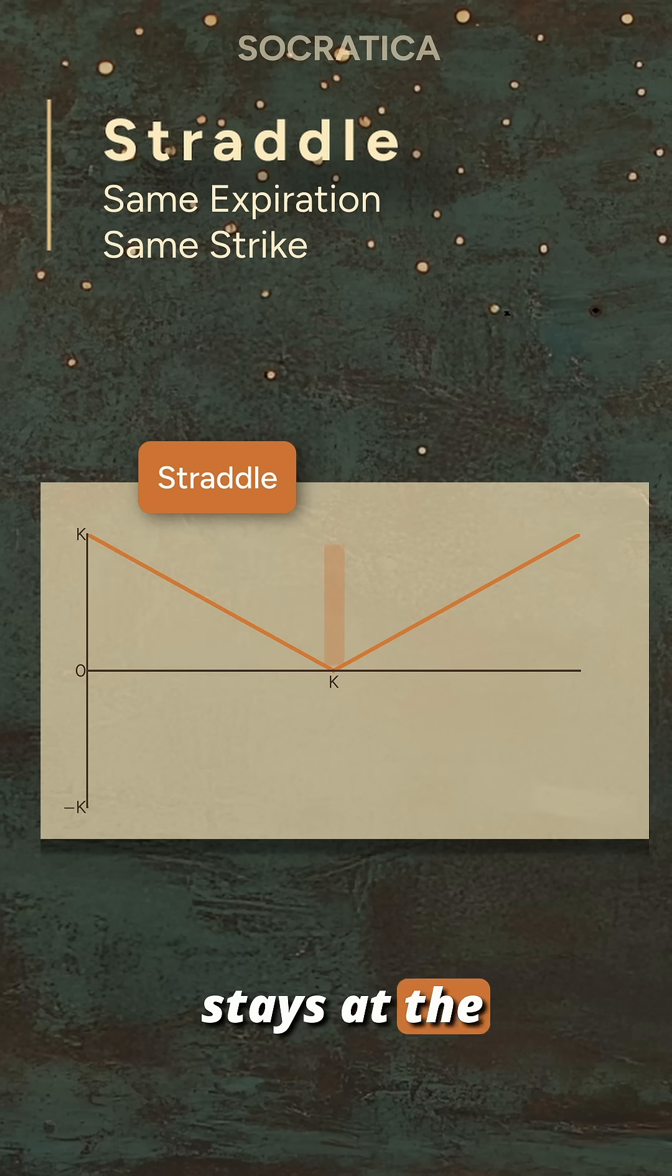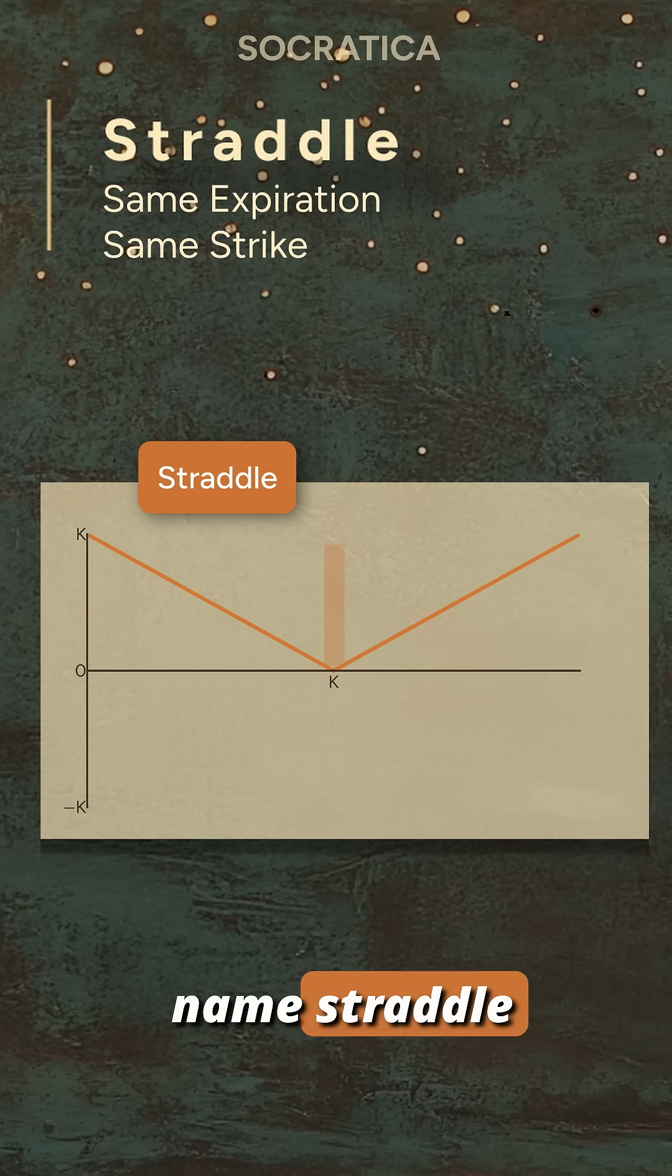And if the stock stays at the strike, neither option is in the money. You lose both premiums. This shape straddles the strike price. That's where the name straddle comes from.